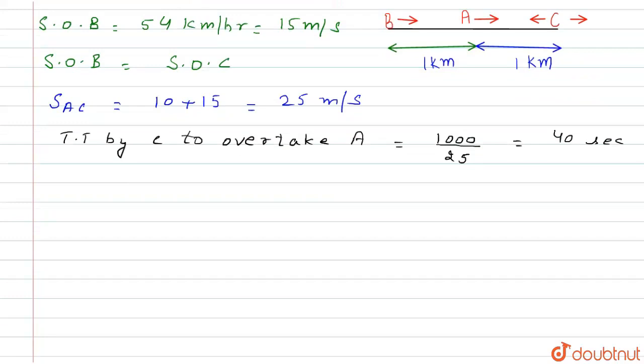The distance traveled by A in this time is 10 × 40 = 400 meters.